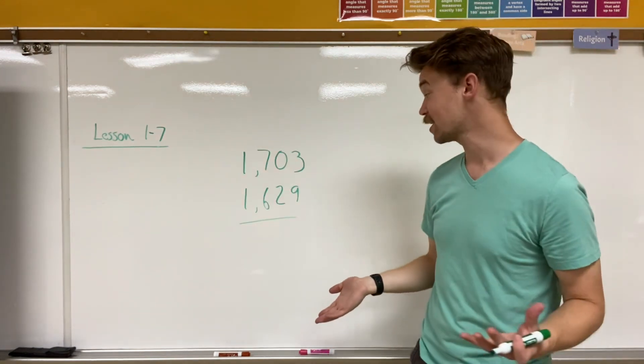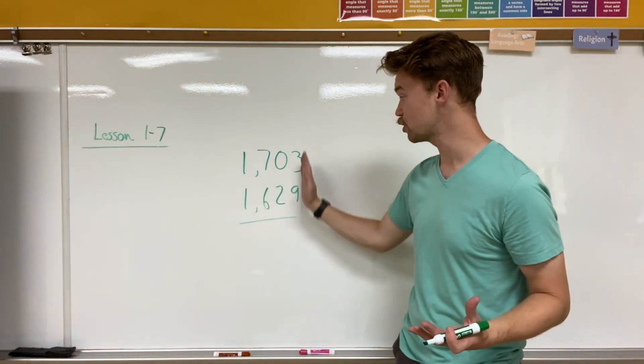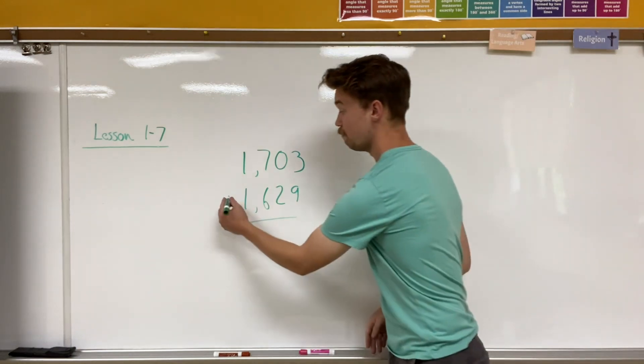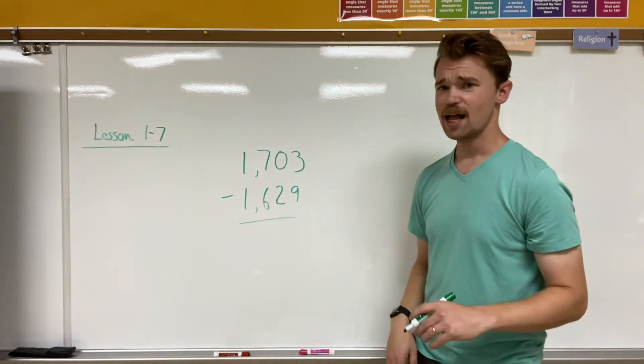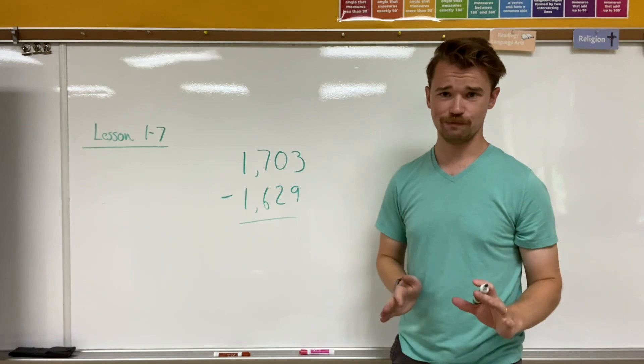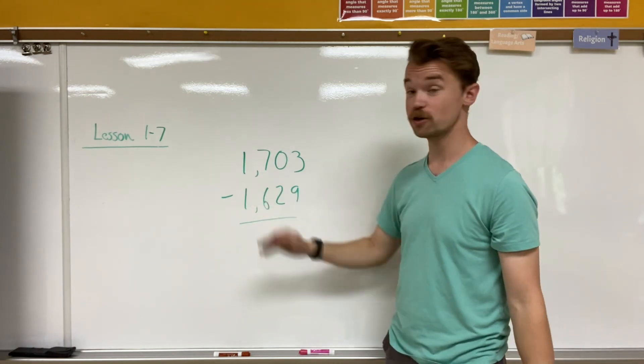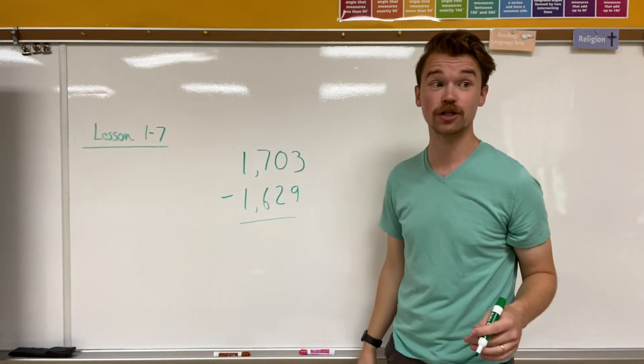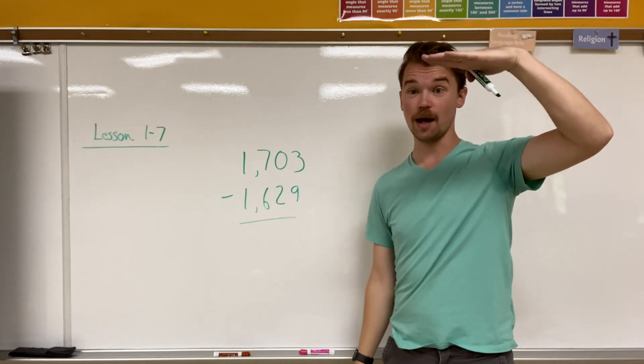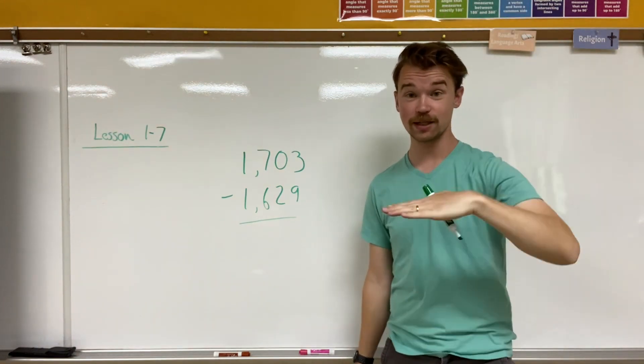Now with subtraction, it's the exact same way. I start with my ones place and make sure that I have all my numbers in line. Make sure that I check to see if I am subtracting or adding. And subtraction has one extra step. We actually have to start on the left side and make sure, can we subtract each number from the minuend, subtracting the subtrahend.